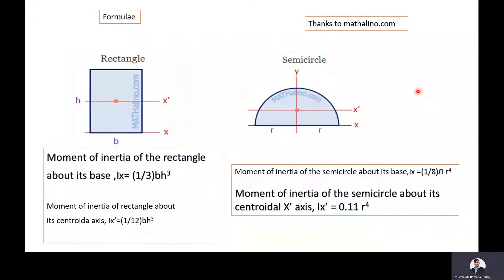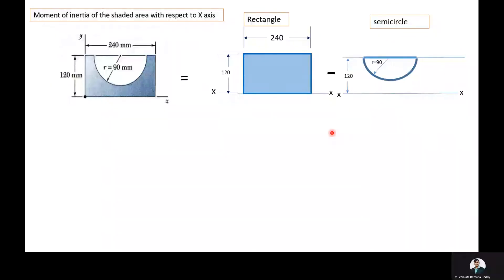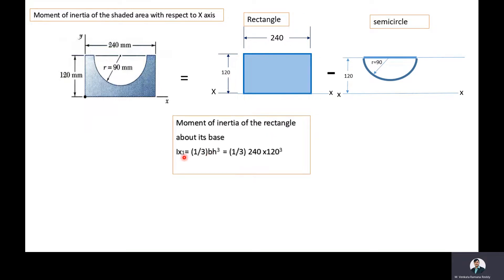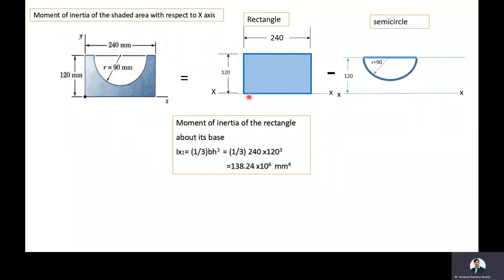Based on the above formulae, we will find the moment of inertia of the shaded region about the x-axis. The moment of inertia of the rectangle about its base x-axis is ix = (1/3)bh³. Here, the breadth of the rectangle is 240 mm and the height is 120 mm. Substituting these values: ix1 = (1/3) × 240 × 120³ = 138.24 × 10⁶ mm⁴.